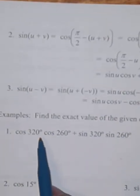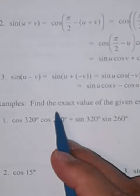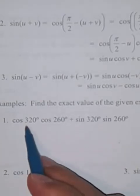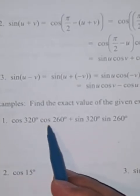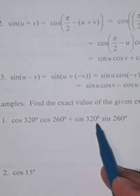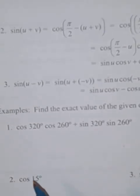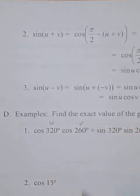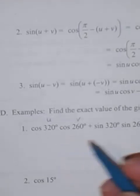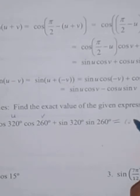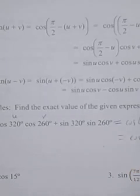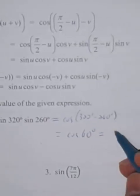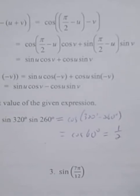Let's use these formulas for some examples. Example one: find the exact value of cosine(320°) cosine(260°) plus sine(320°) sine(260°). This matches the cosine of (u minus v) formula, with u = 320° and v = 260°. So the expression equals cosine(320° minus 260°) = cosine(60°) = one half.